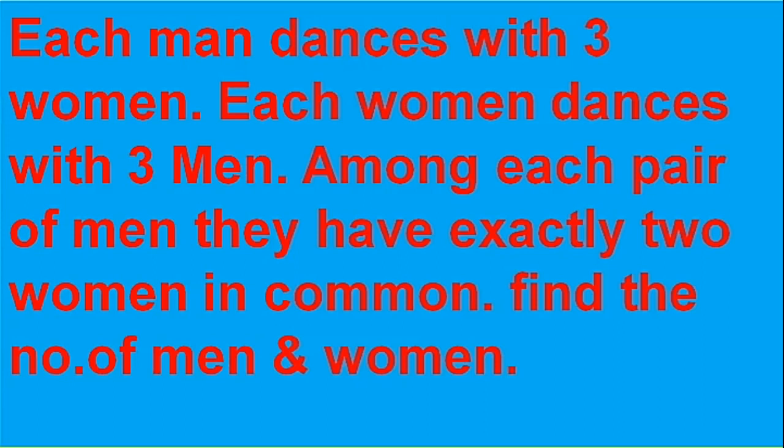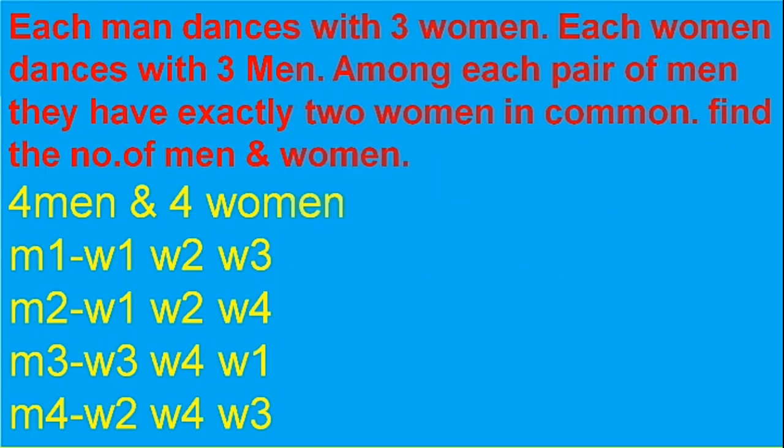That means one man dances with three women and each woman dances with three men. So the possible answer can be four men and four women. One more extra: M1 dances with W1, W2, W3. M2 dances with W1, W2, W4. M3 dances with W3, W4, W1. M4 dances with W2, W4 and W3. So answer is four men and four women. Just remember this.